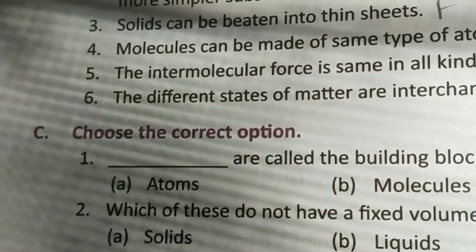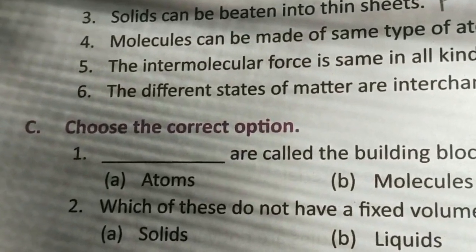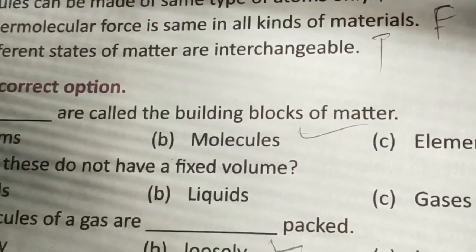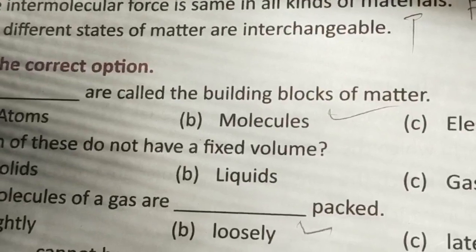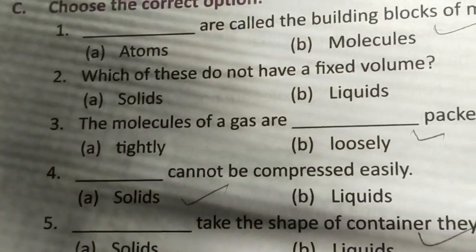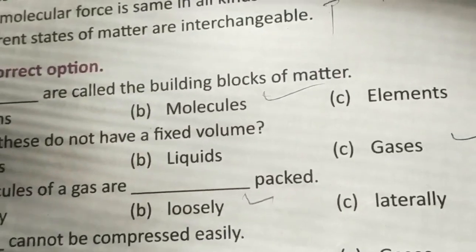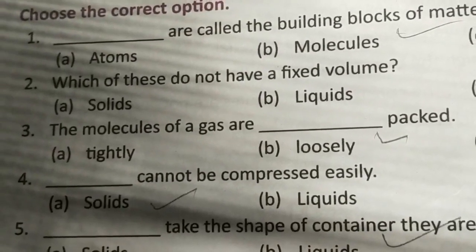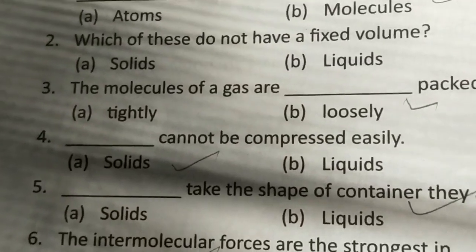Question C: choose the correct option. First: dash are called the building blocks of matter — write molecules, because molecules have independent existence while atoms do not. Second: which of these do not have a fixed volume — write gases, because the molecules of a gas are loosely packed.